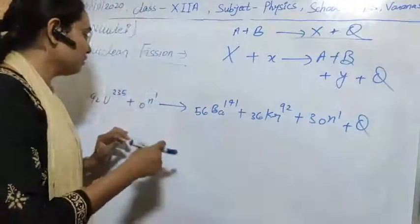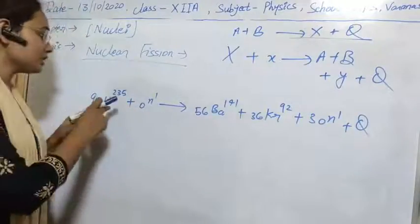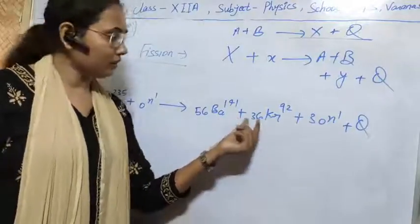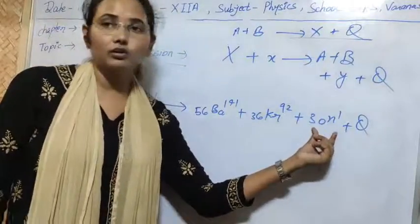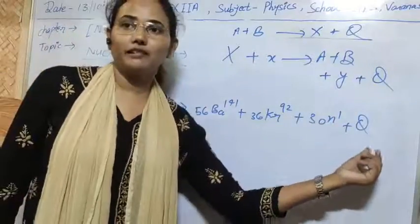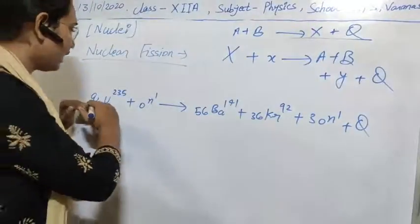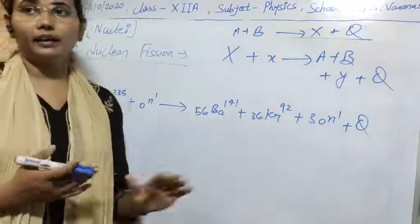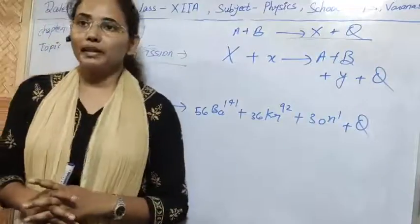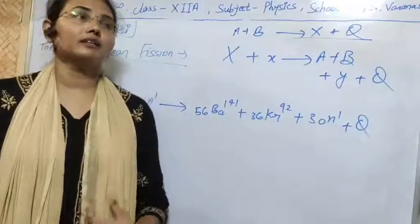We can understand it with one example. If uranium-235 is bombarded by a fast-moving neutron, then due to bombardment this uranium-235 is split into two atoms — barium and krypton — and it is followed by emission of three neutrons and some amount of energy of the order of mega electron volts. This is the case of nuclear fission in which a heavier nucleus splits into lighter nuclei with release of some particles and energy.